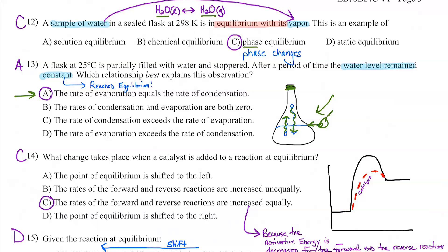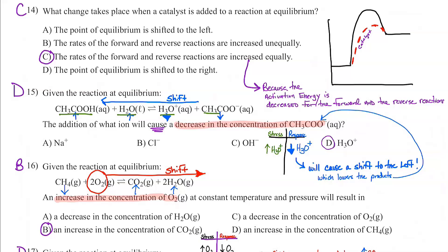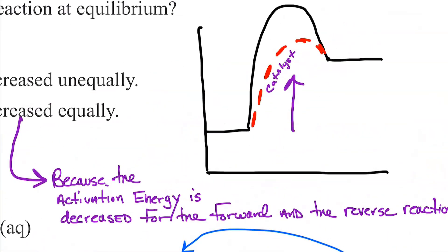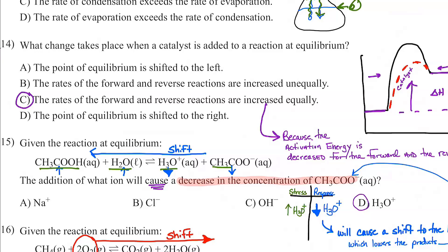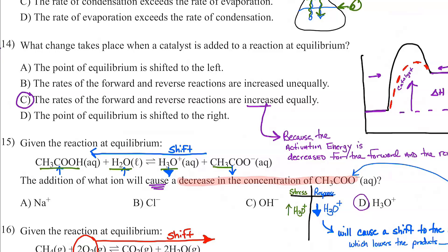Number fourteen: what change takes place when a catalyst is added? We've been over this — the top of the hill is now smaller. What gets people is that the rates of the forward and reverse reactions increase equally. When you add a catalyst, you don't change the energy where you start and finish, so delta H doesn't change. We speed up the forward by lowering its activation energy, and we also speed up the reverse equally. All a catalyst does with equilibrium is help you get to equilibrium faster. So 14 is C.